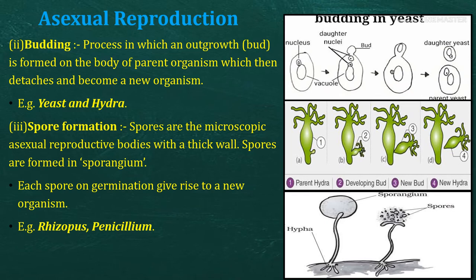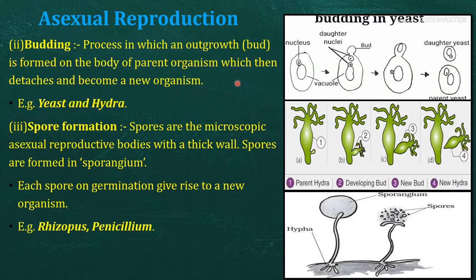Next comes the process of budding. As the name suggests, budding involves the formation of a small bud on the organism. This bud grows from the parent organism's body, then detaches and forms a new daughter cell. This budding process is seen in yeast and hydra. In budding, an outgrowth bud is formed on the body of the parent organism, which then detaches and becomes a new organism.